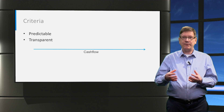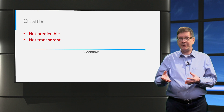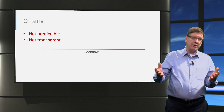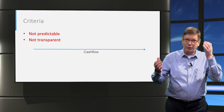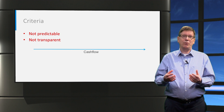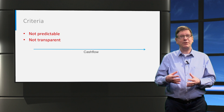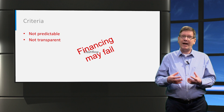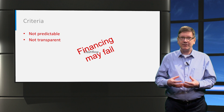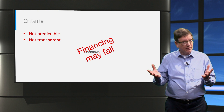If the project cash flows are not predictable and transparent — for example due to the occurrence of substantial project risks — investors will not be able to determine their expected return, and then they will not want to invest and the project financing will fail.